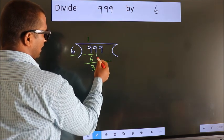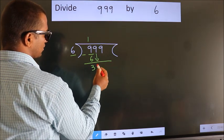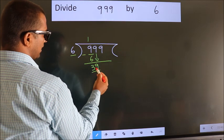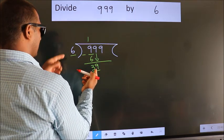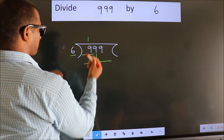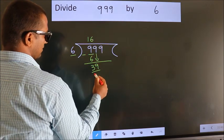After this, bring down the beside number. So, 9 down. So, 39. A number close to 39 in 6 table is 6 times 6 equals 36.